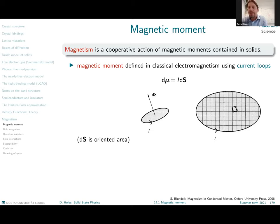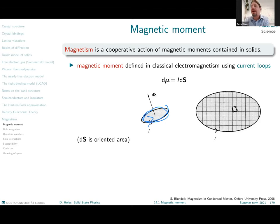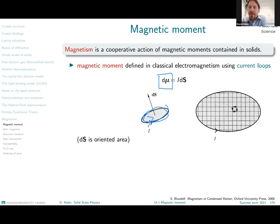What do we understand under the term magnetic moment? It is defined as a product of a current when we speak about current loops. Here we have a current running in loops and encircling a certain area. This area is taken as an oriented area using the right-hand rule. You put your fingers in the direction of rotation of the current and your thumb shows you the orientation. This gives a physical quantity that is a vector.